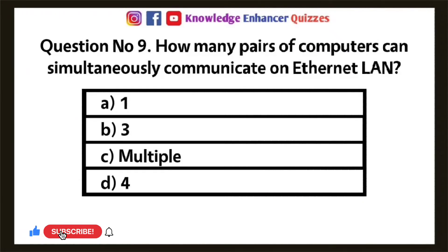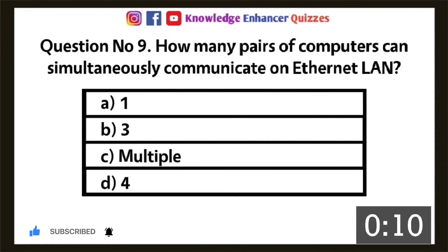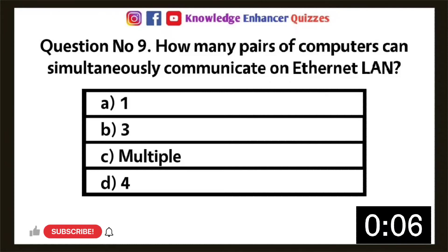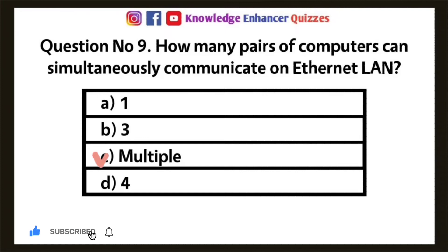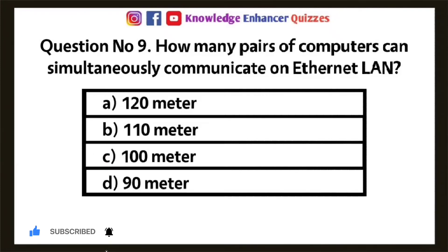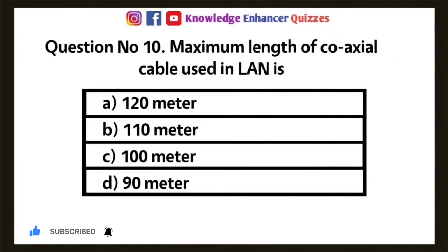Question 9: How many pairs of computers can simultaneously communicate on Ethernet LAN? Option A: 1, Option B: 3, Option C: Multiple, Option D: 4. Option C is the right answer.